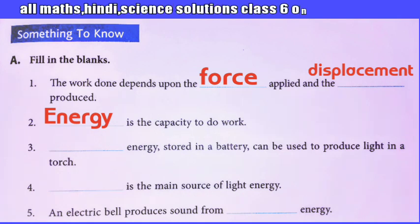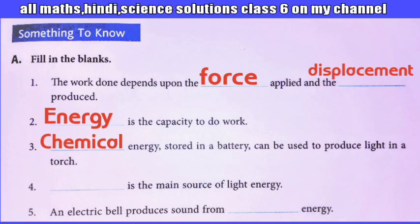Question number three: Chemical energy stored in a battery can be used to produce light in a torch. Question number four: Sun is the main source of light energy.